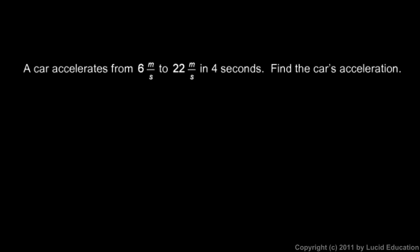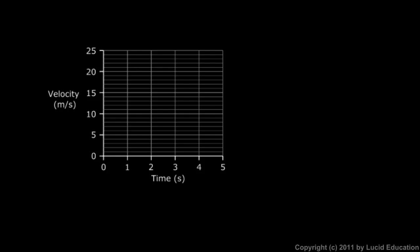Now we'll talk about graphing acceleration, and we'll do this by thinking about our earlier example. In the first example we looked at, a car accelerated from 6 meters per second to 22 meters per second in 4 seconds, and we were told to find the car's acceleration. What we're going to do now is make a graph of this motion.